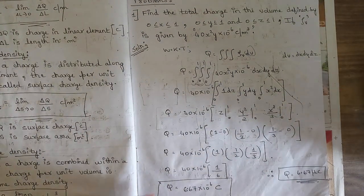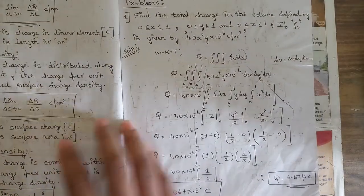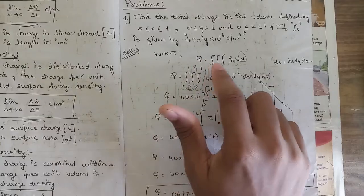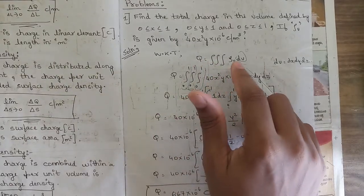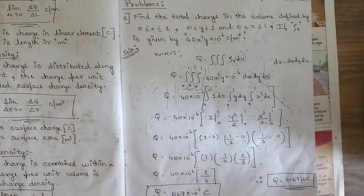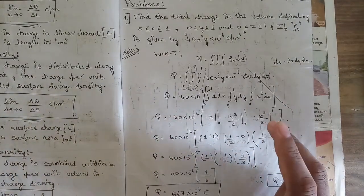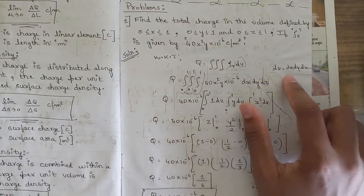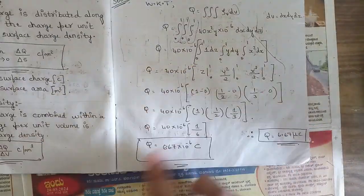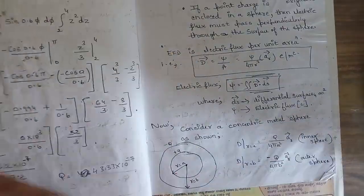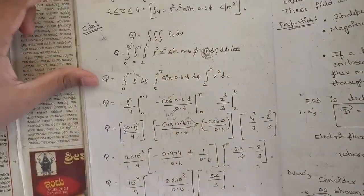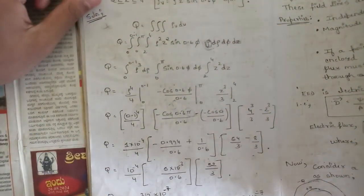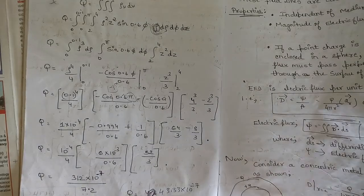Problems related to charge distributions are a must question and might be asked for five to six marks. We need to find the total charge enclosed within a volume, surface, or area. The standard formula is Q = volume integral of ρv dv. The value of dv changes across coordinate systems: in rectangular it is dx dy dz, and in cylindrical it is ρ dρ dφ dz. You need to know and solve these.